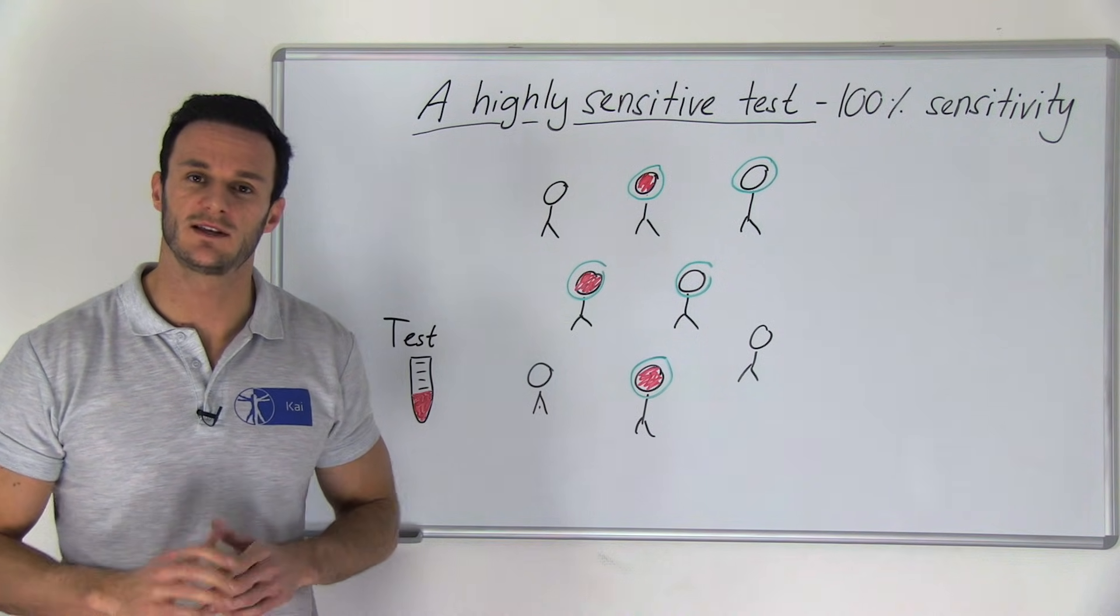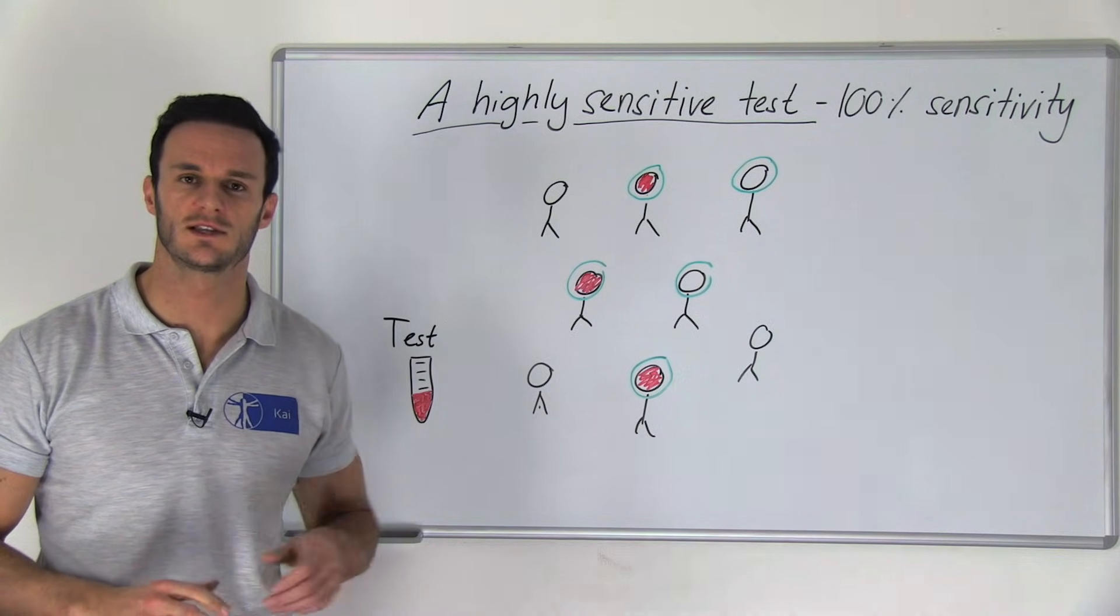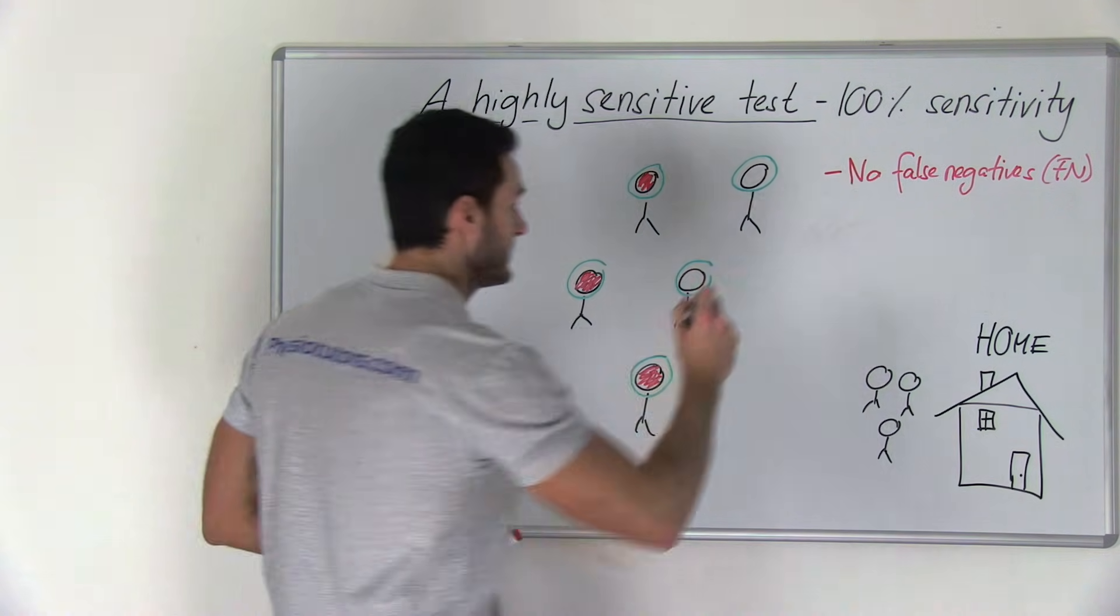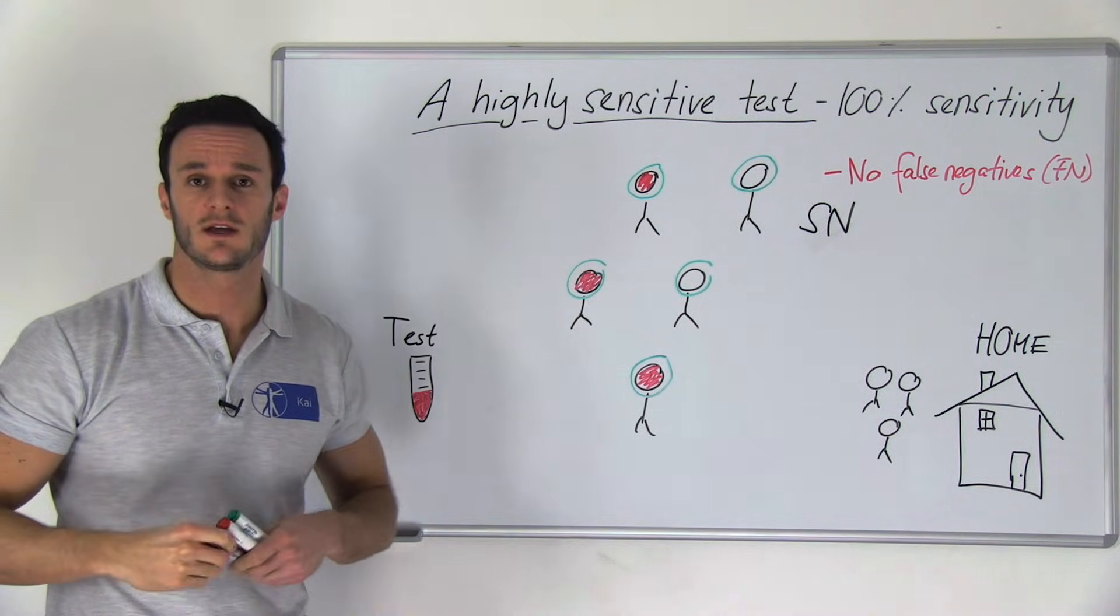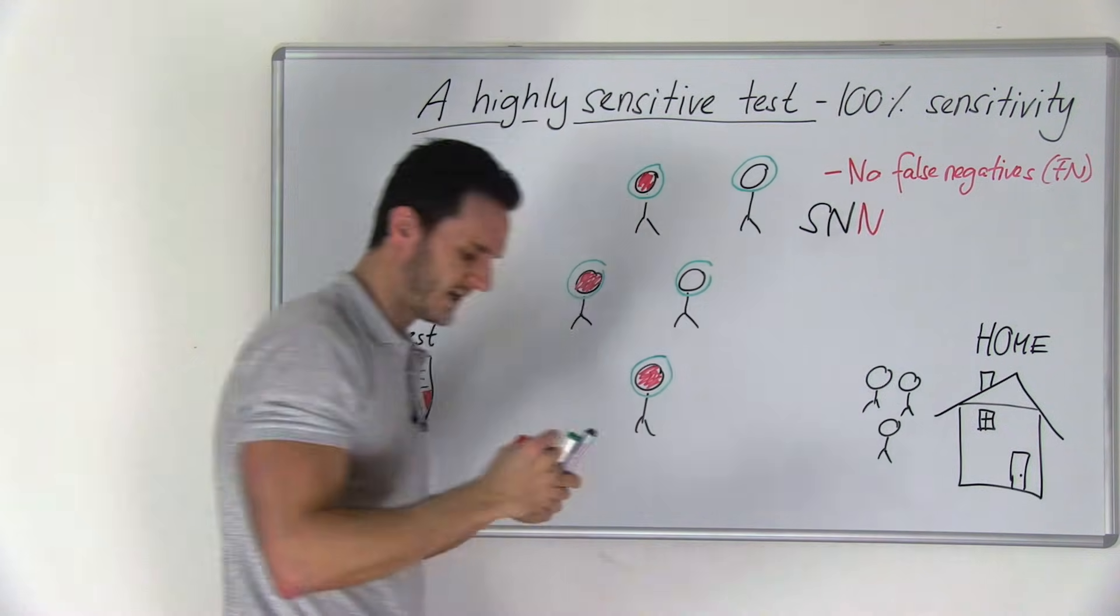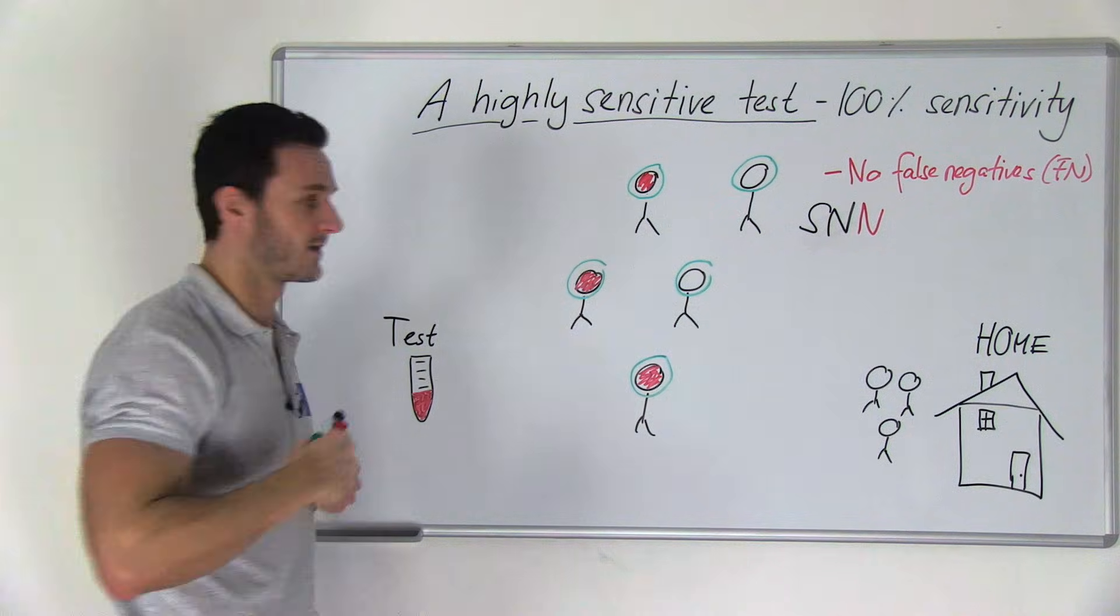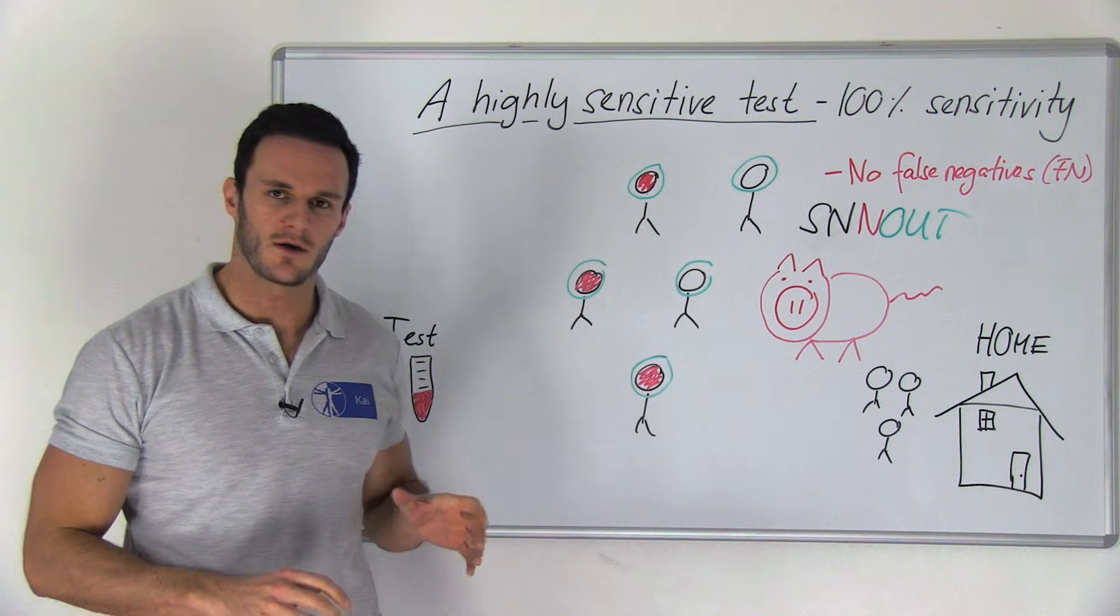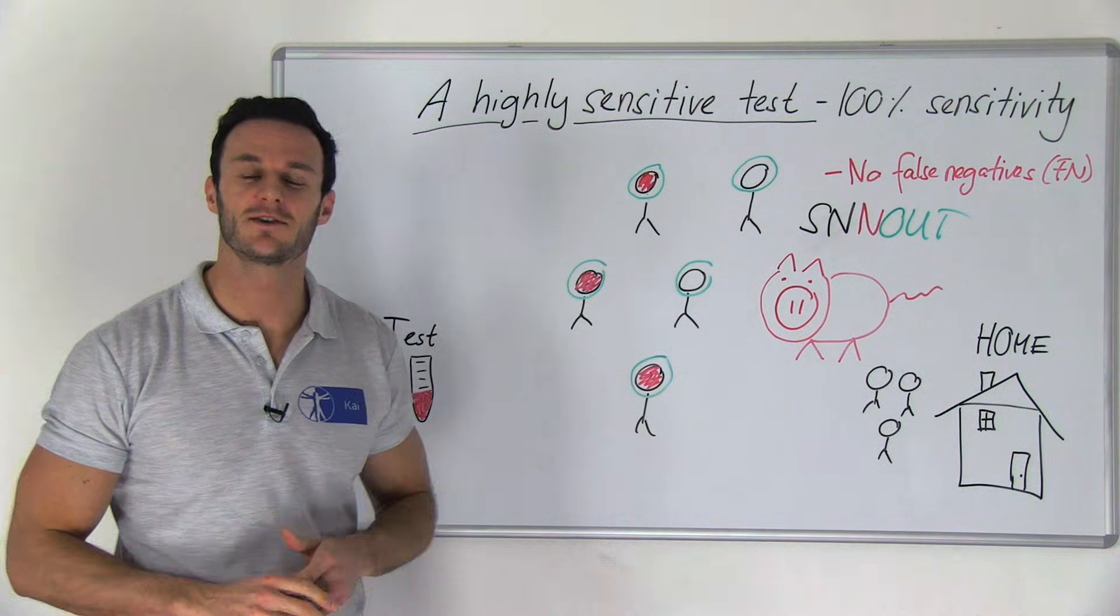All the persons that tested negative can be sent home because they definitely do not have the disease. So with a 100% sensitive test, abbreviated as SN, we do not have any false negatives. Therefore if they have a negative test result, we can be 100% sure that they do not have the disease and we can rule them out.